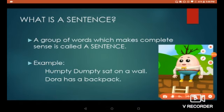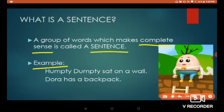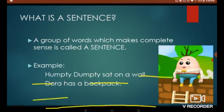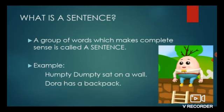Now let's see what a sentence is. A group of words which makes complete sense is called a sentence. For example: 'Humpty Dumpty sat on a wall' and 'Dora has a backpack.' These two sentences give us some information and make complete sense, so they are called sentences.